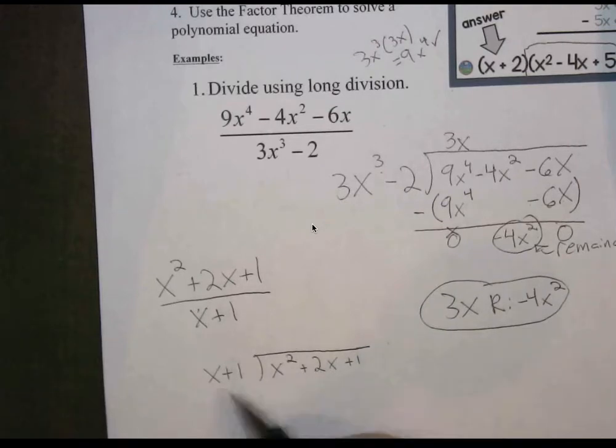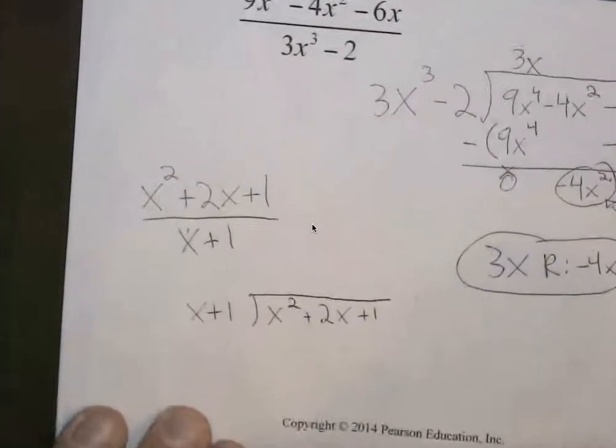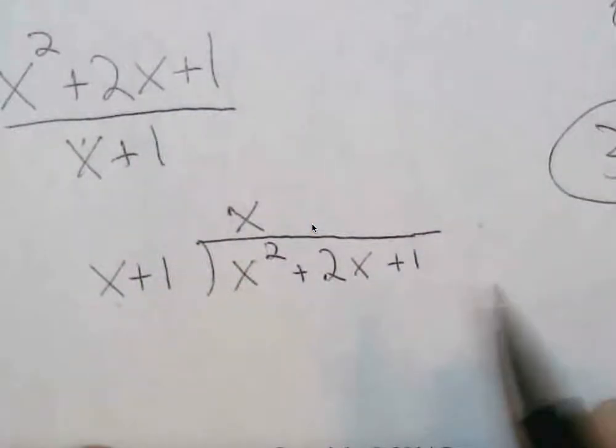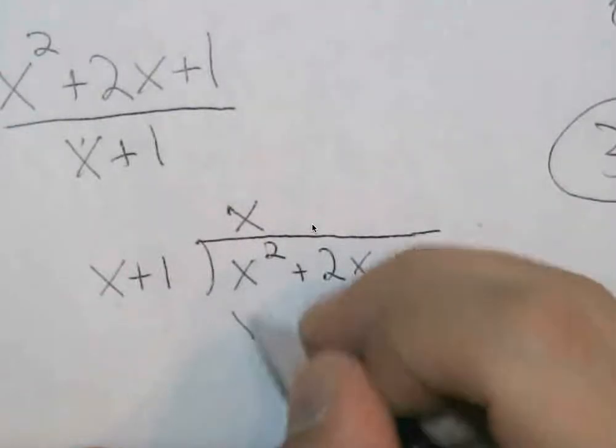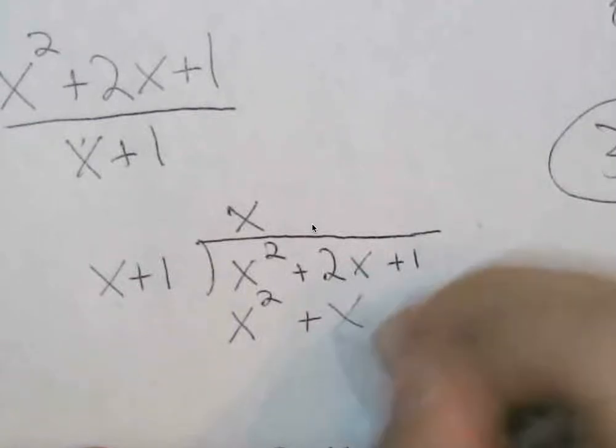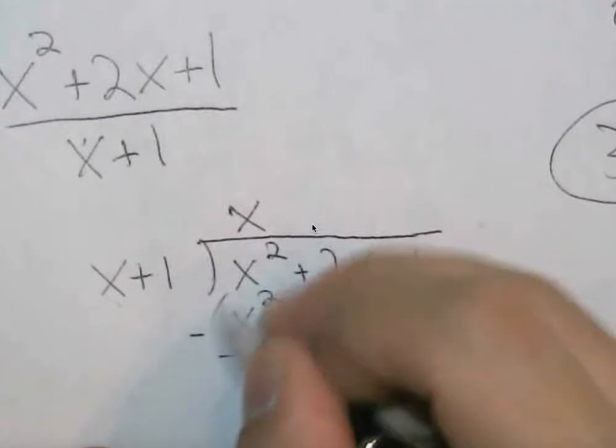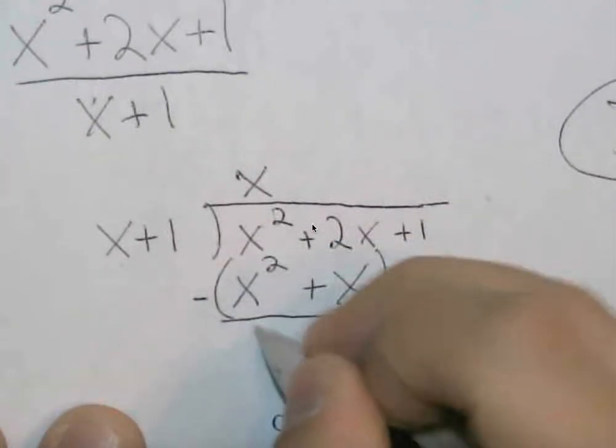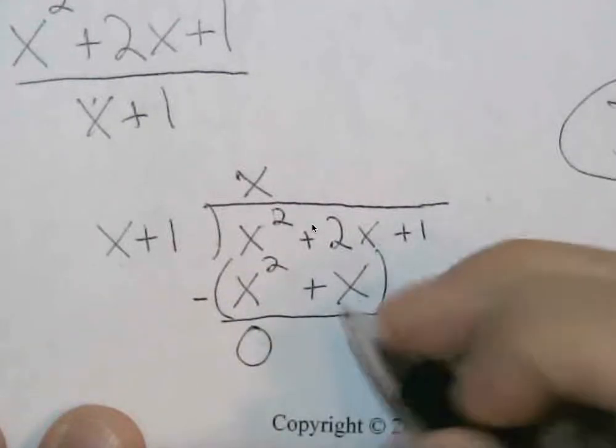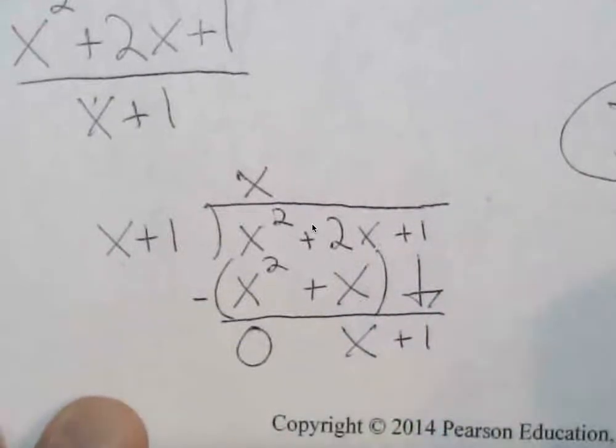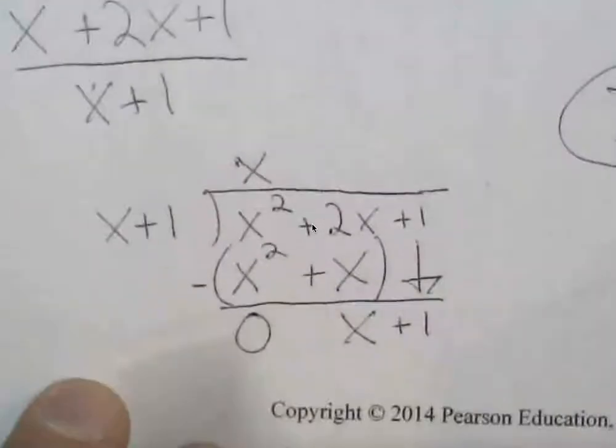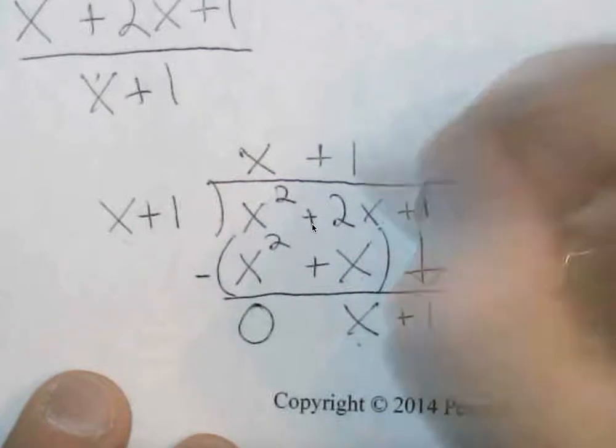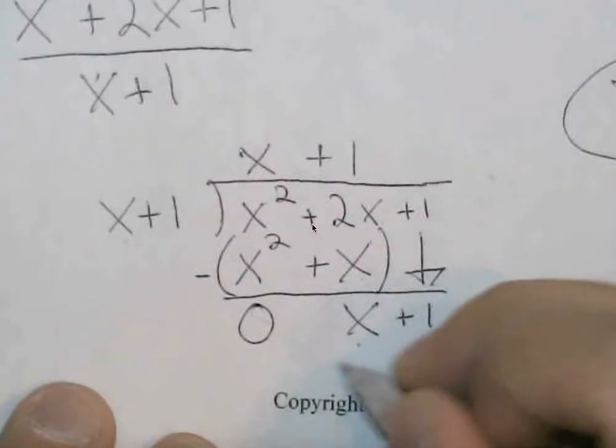You're thinking what term when multiplied with x will get x squared. Hopefully you're saying x. x times x plus 1 would get you x squared, and you're also going to add on an x term. Keeping in mind that you're subtracting all of this, x squared minus x squared gets you 0. 2x minus x gets you positive x. 1 is going to come down. Now you're thinking what term when multiplied with x will get you x, which is just 1. So plus 1. 1 times x plus 1 is just x plus 1.